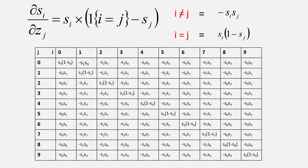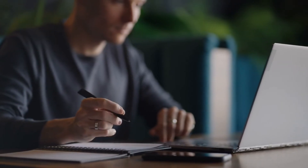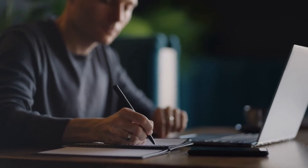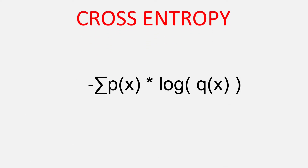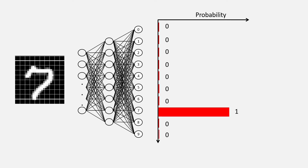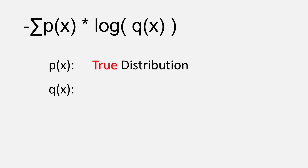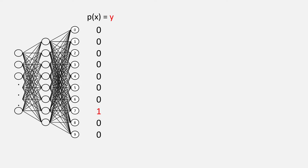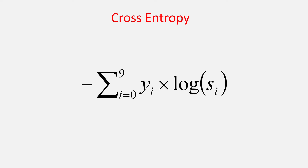Now we can finally combine this with the cross entropy function. If you haven't checked out my video on entropy and cross entropy, search for it on YouTube. You need to understand cross entropy to follow along. The cross entropy formula is negative summation of P(x) · log(Q(x)), where P(x) is the true distribution — for our image 7, it's a one-hot encoding with zeros at all positions except the digit 7. Q(x) is the predicted softmax distribution. So replacing P(x) with y_i and Q(x) with s_i, the cross entropy loss function in our case will look like this, and we'll call it L.